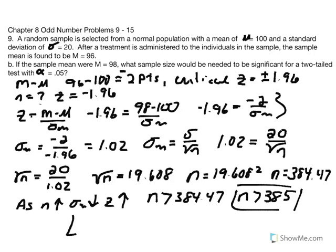Our z score critical region is identified as negative 1.96, and we would need to generate a z value greater than that — greater than 1.96 in the sense of 1.97, 1.98, and so on — noting that the negative sign just tells us which side of the mean we are on.